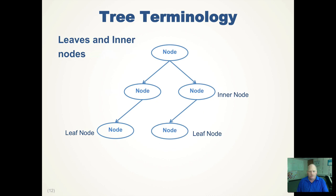Leaf nodes are nodes that have no successors or no children, and they are different from inner nodes, because inner nodes have children. Leaf nodes are at the end or the edge of the tree. The root node is an inner node unless it has no children.